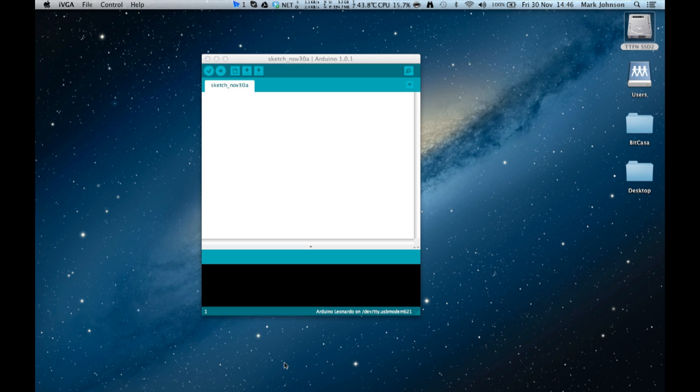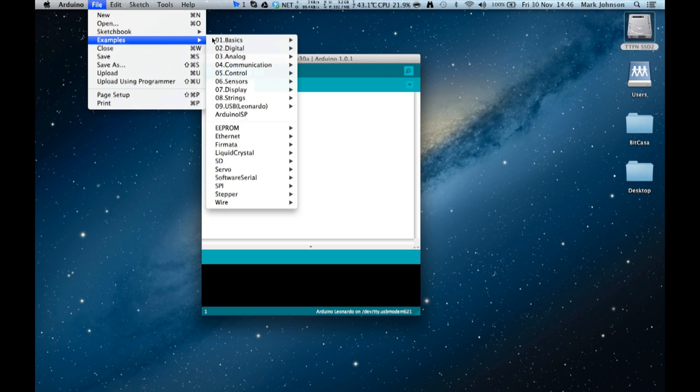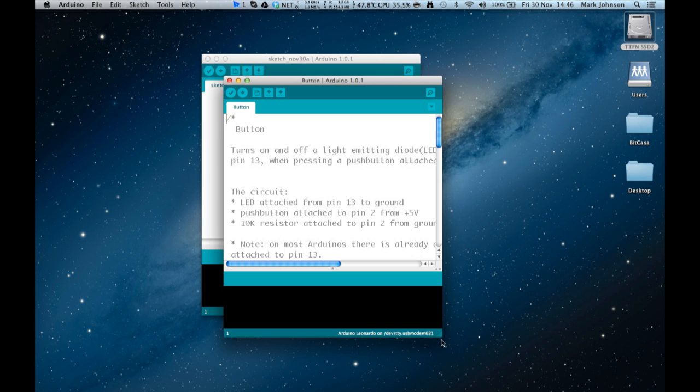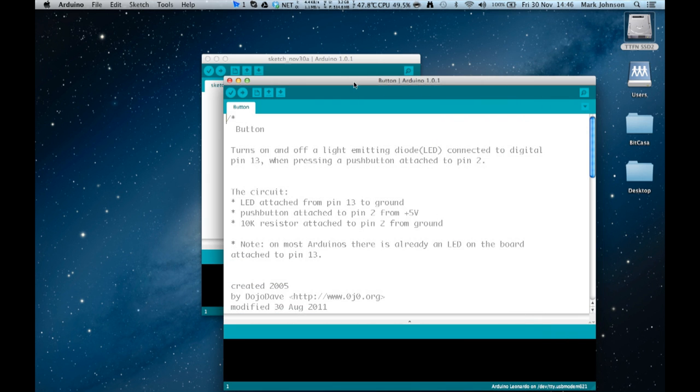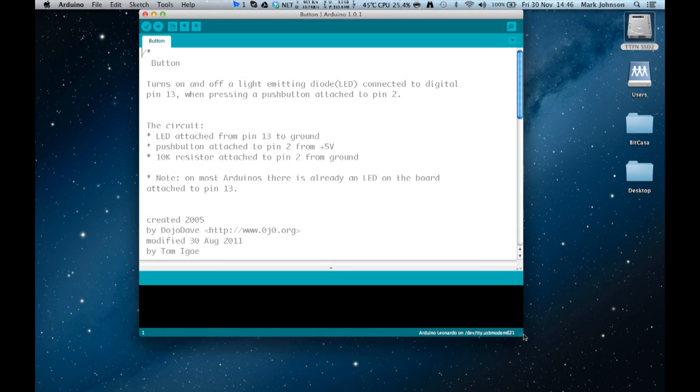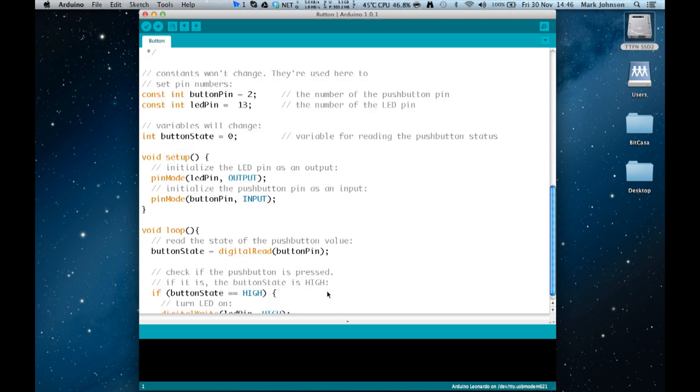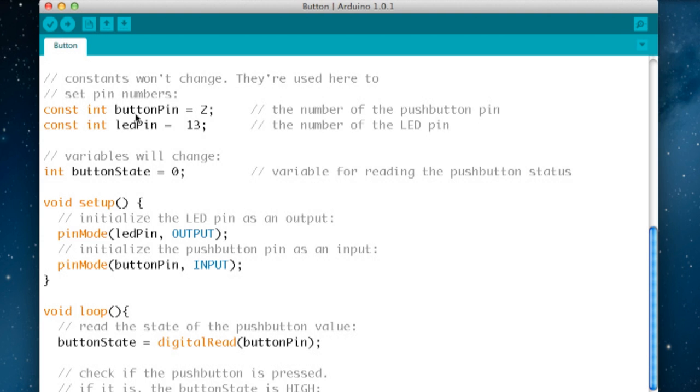We're going to use one of the examples that come with the Arduino development environment so let's load that up now. We're going to go to the Arduino, to file, examples, digital, and button. Let's make this a little bit larger so you can read it.